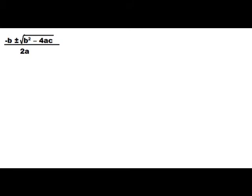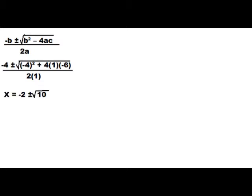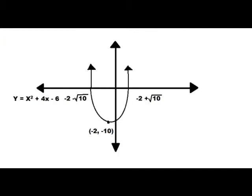Now we're gonna use the quadratic formula to find our zeros. This is a pretty complex equation, so we plug everything in: negative four plus or minus the square root of negative four squared plus four times one times negative six, all over two. This comes out to x equals negative two plus or minus the square root of ten. Let's go ahead and stick those zeros on there — we've got a pretty good look at how our graph is gonna be.